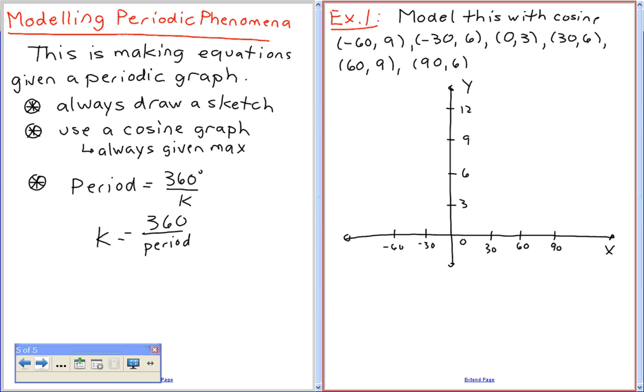Negative 60 and nine is going to be something like this. Negative 30 and six is going to be here. Zero and three is going to be here. 30 and six is going to be here. 60 and nine is going to be here. 90 and six is going to be here. So my graph is going to look something like that. That's just a rough little sketch. It does not take too much time. But it's a lot easier to see stuff using the graph than it is just with the data. Any questions over the graph?